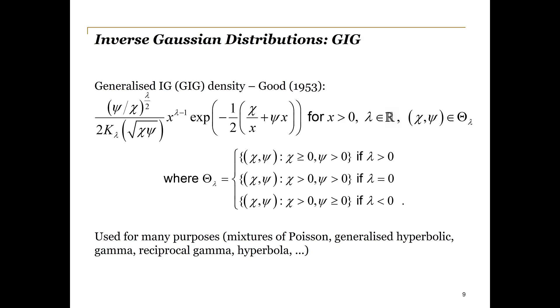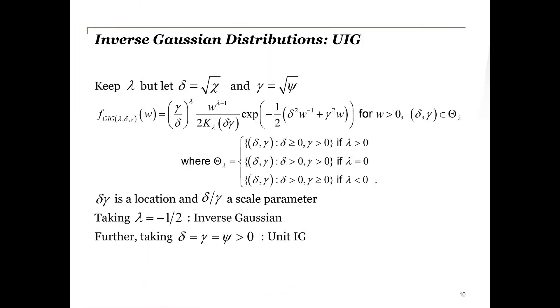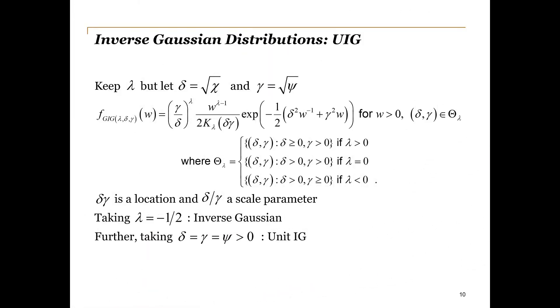The generalized inverse Gaussian distribution was proposed in 1953 and has since been used for many purposes. Following others, we will choose to work with an alternative parameterization, as given here. Note that delta times gamma is a location parameter and delta over gamma is a scale parameter. We then start moving to special cases. Firstly, fixing lambda at minus a half leads to the inverse Gaussian distribution. And secondly, setting delta equal to gamma equal to psi gives us the unit inverse Gaussian distribution, which we are particularly interested in.